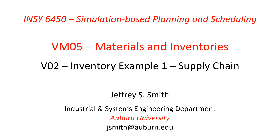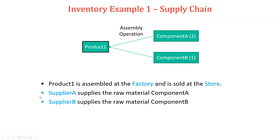This is the second video in the Materials and Inventories module, and we're going to work with an example Simio model of a supply chain. This is our first complete model using the inventory element. We have a very simple supply chain with a single product. Product one is comprised of two components: Component A, where we need two units per product, and Component B, where we need one unit. The product is assembled at a factory and sold at the store. Supplier A supplies Component A, and Supplier B supplies Component B.